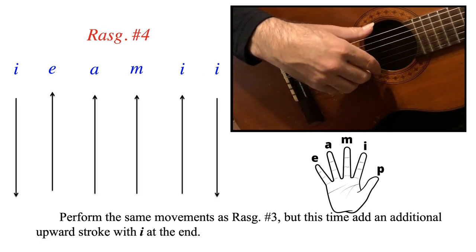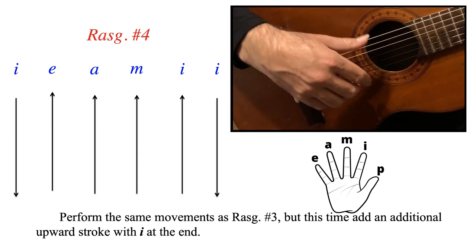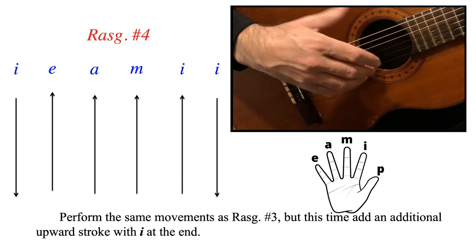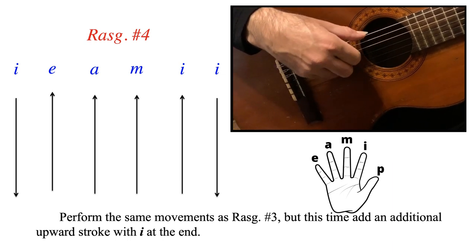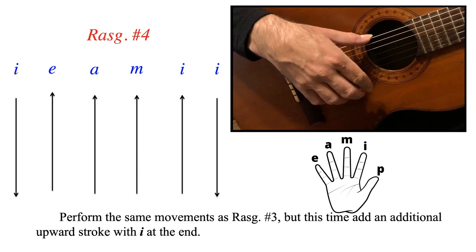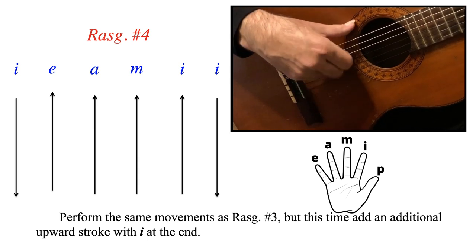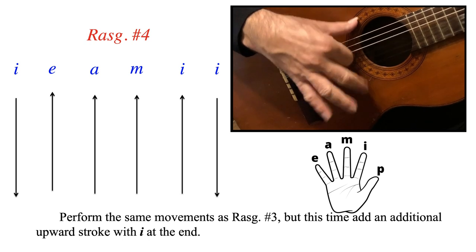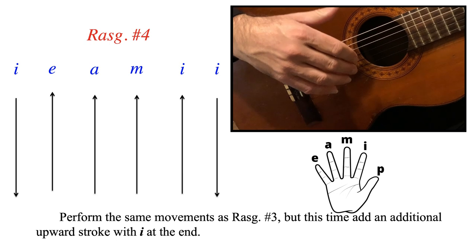Rasqueado number 4. Here we perform the same movements as number 3, but this time we add an additional upstroke with I at the end. So now we're starting with I and ending with I. We have a nice robust cycle, and this could be used in a palo like Verdiales.